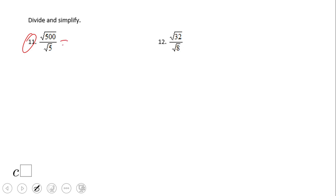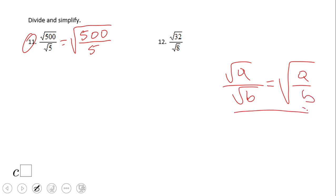Probably the best way is to rewrite this quotient of square roots. We have a rule that tells us square root of a over square root of b equals square root of a over b. This goes both ways, so don't forget. In this case, we have 500 divided by 5, which is 100.